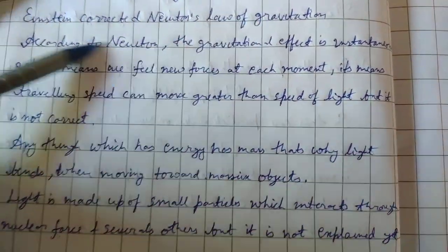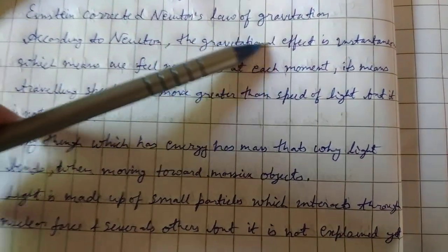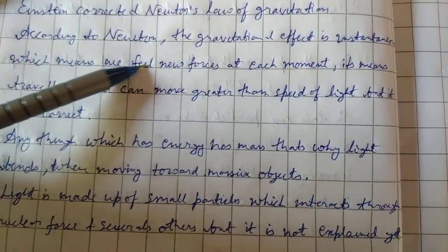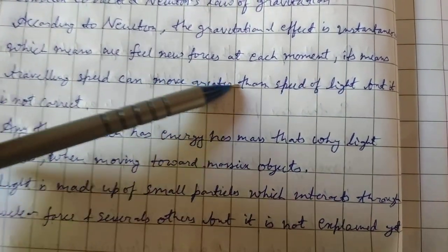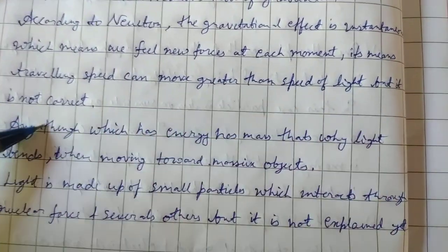Einstein corrected Newton's law of gravitation. According to Newton, the gravitational effect is instantaneous, which means we feel new forces at each moment. It means traveling speed can move greater than speed of light, but it is not correct.